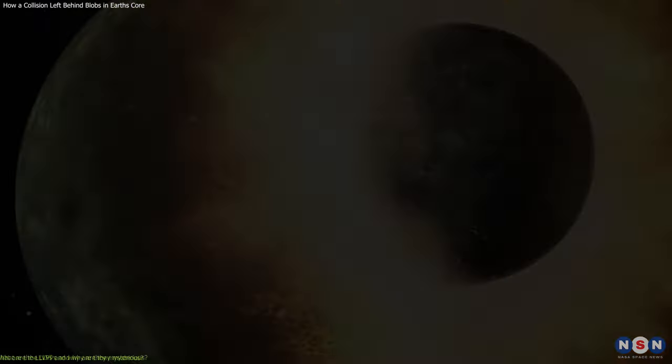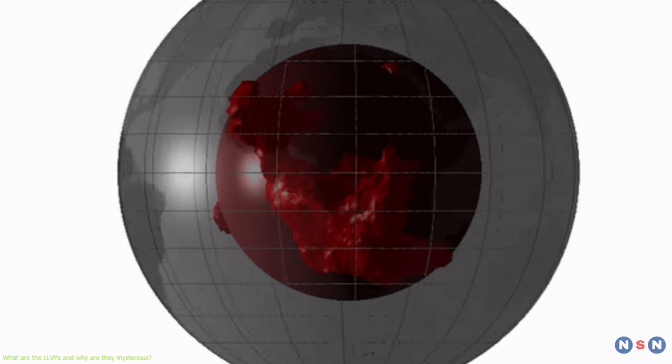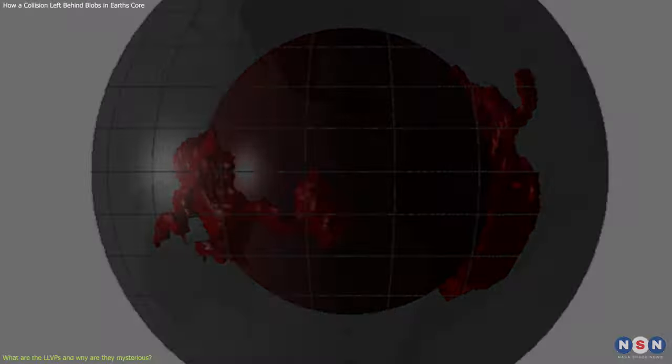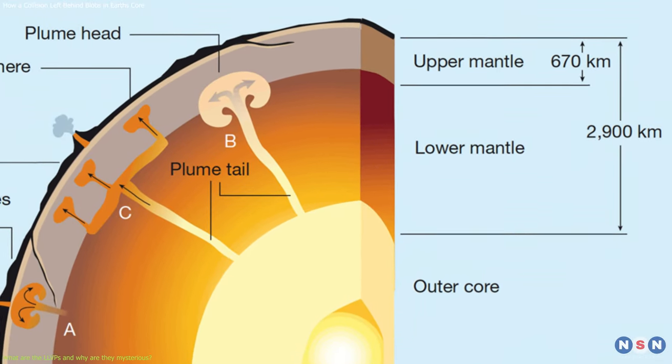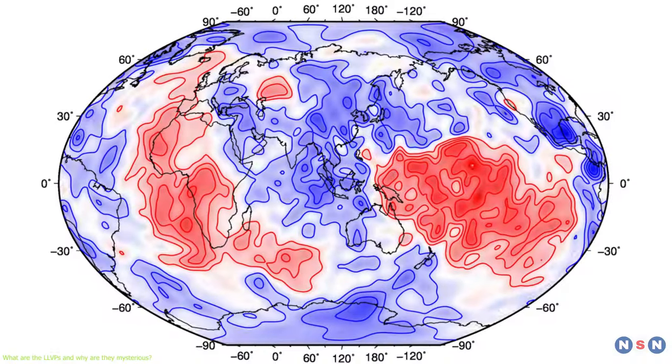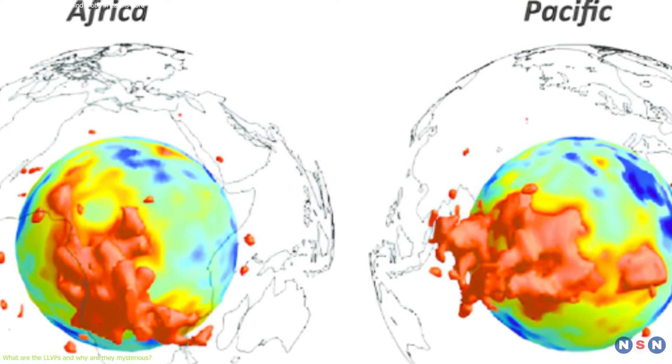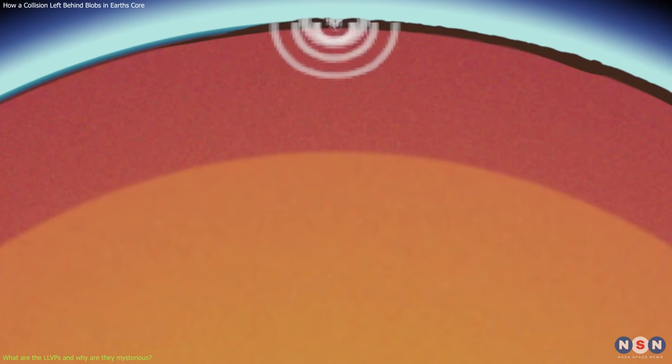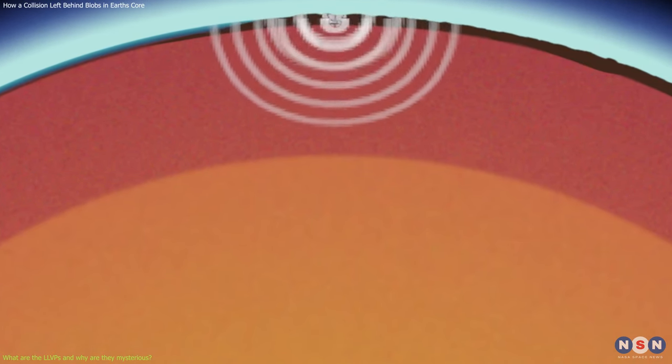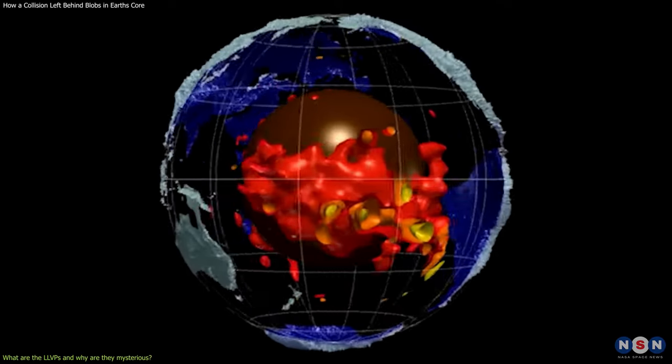Before we dive into the new theory, let's first understand what the LLVPs are and why they are mysterious. The LLVPs are two huge regions in the lowermost part of the Earth's mantle, the layer of hot and molten rock that surrounds the core. The LLVPs are about 1,000 kilometers thick and cover about 10% of the Earth's surface area. They are called Low-Velocity Provinces because seismic waves slow down when they pass through them. This indicates that the LLVPs have different physical or chemical properties than the rest of the mantle.